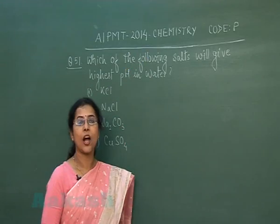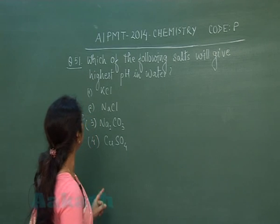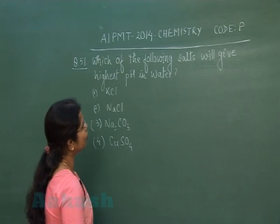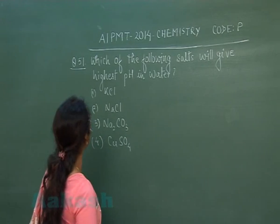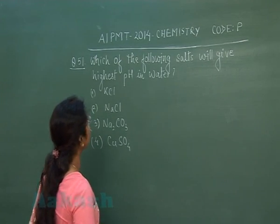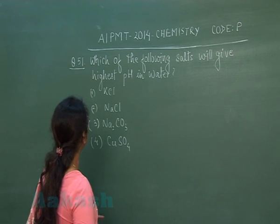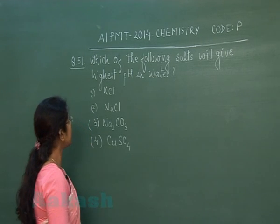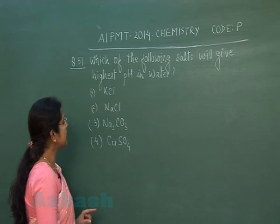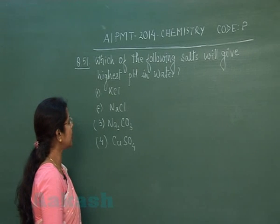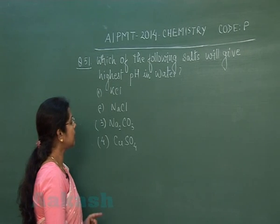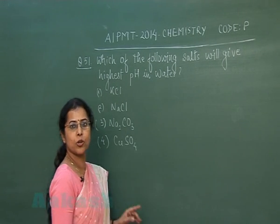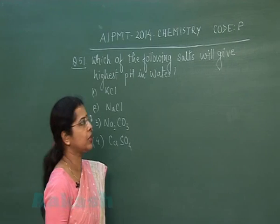Our next question is question number 51. Which of the following salts will give the highest pH in water? The options are: KCl, NaCl, sodium carbonate, and copper sulphate.